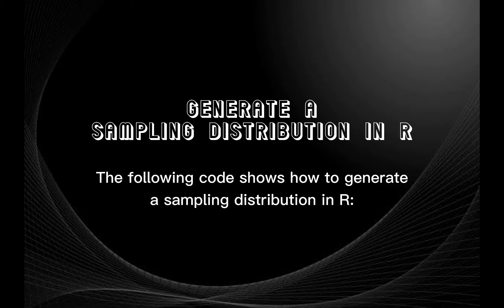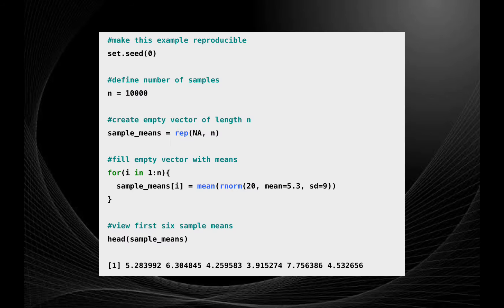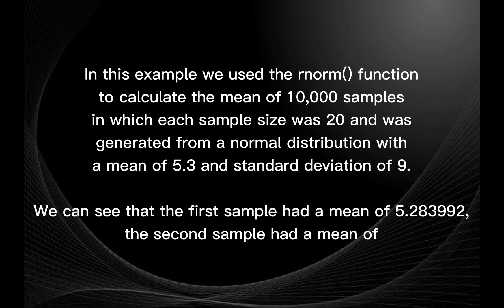The following code shows how to generate a sampling distribution in R. In this example, we use the RNorm function to calculate the mean of 10,000 samples in which each sample size was 20, generated from a normal distribution with a mean of 5.3 and standard deviation of 9. We can see that the first sample had a mean of 5.283992.